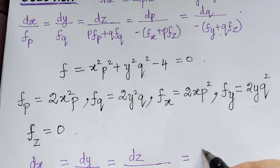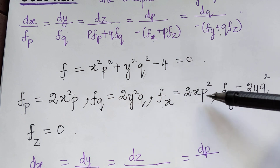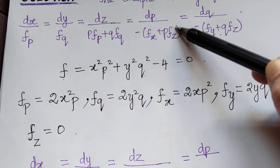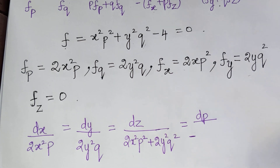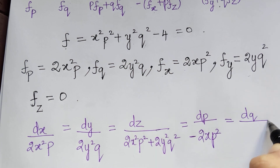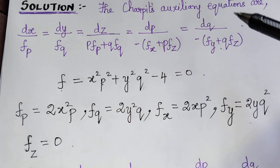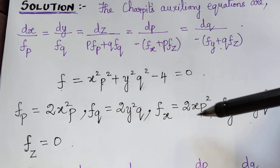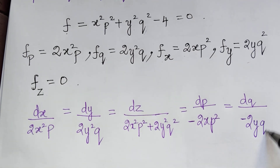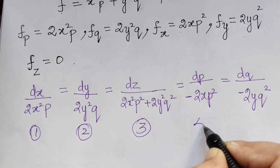Continuing the auxiliary equations: dp divided by −(Fx + p·Fz). Since Fz = 0, this reduces to dp/(−2xp²). And dq divided by −(Fy + q·Fz), which again reduces to dq/(−2yq²). We can label these five ratios as 1, 2, 3, 4, and 5.